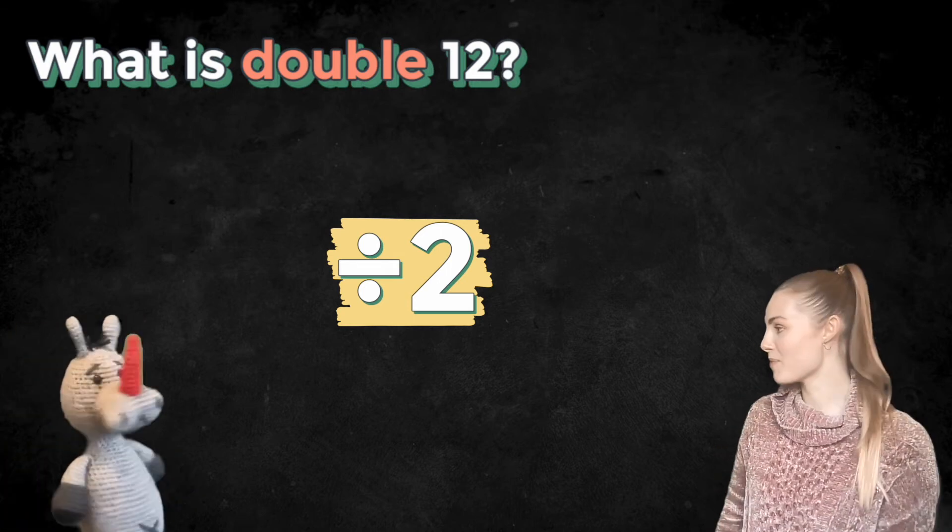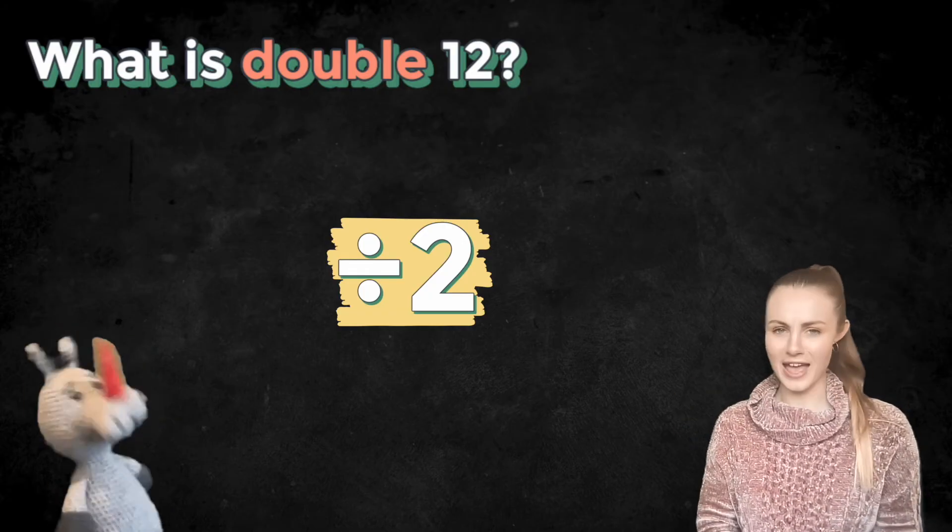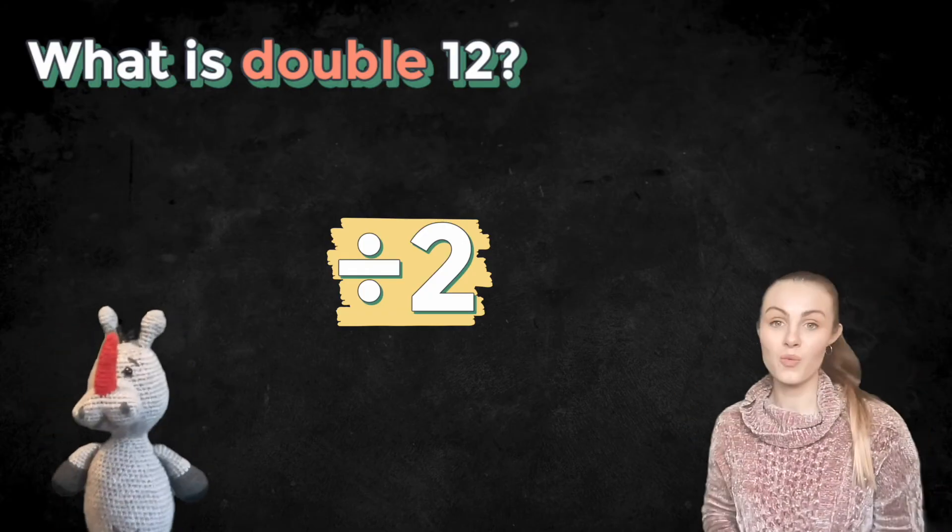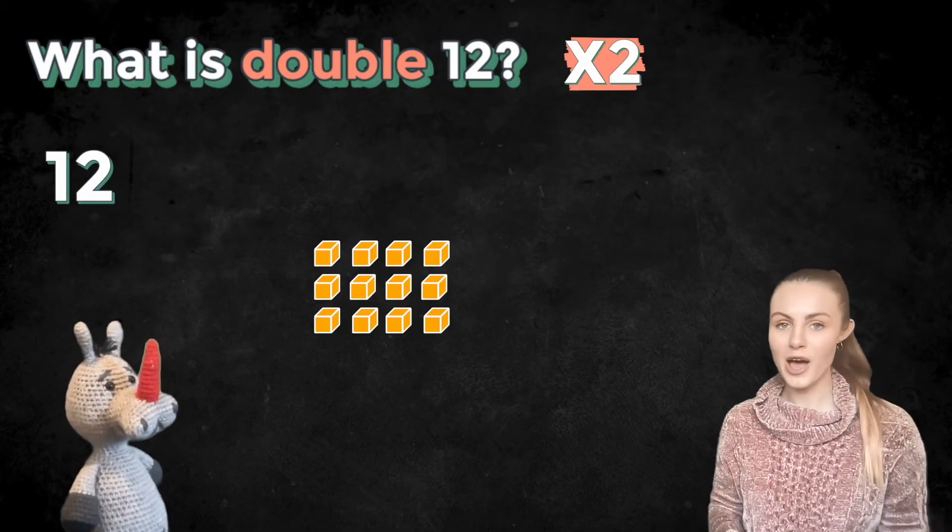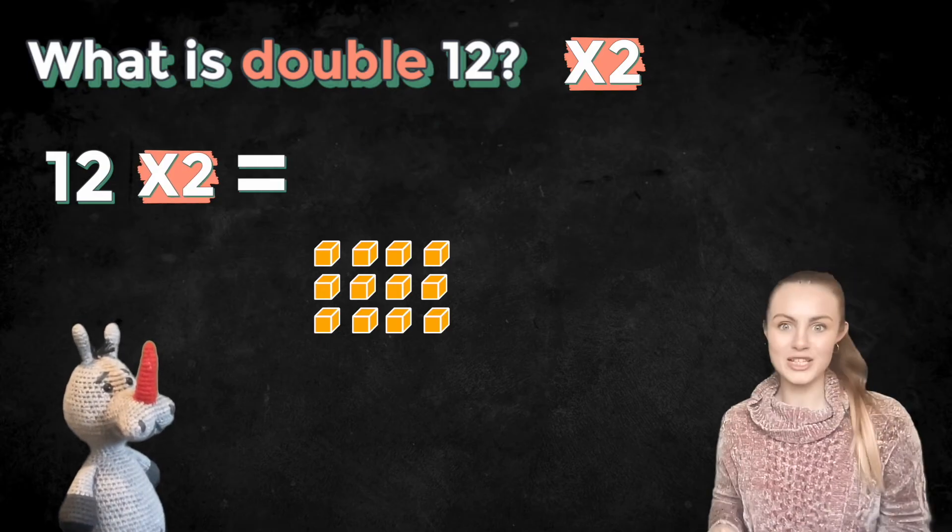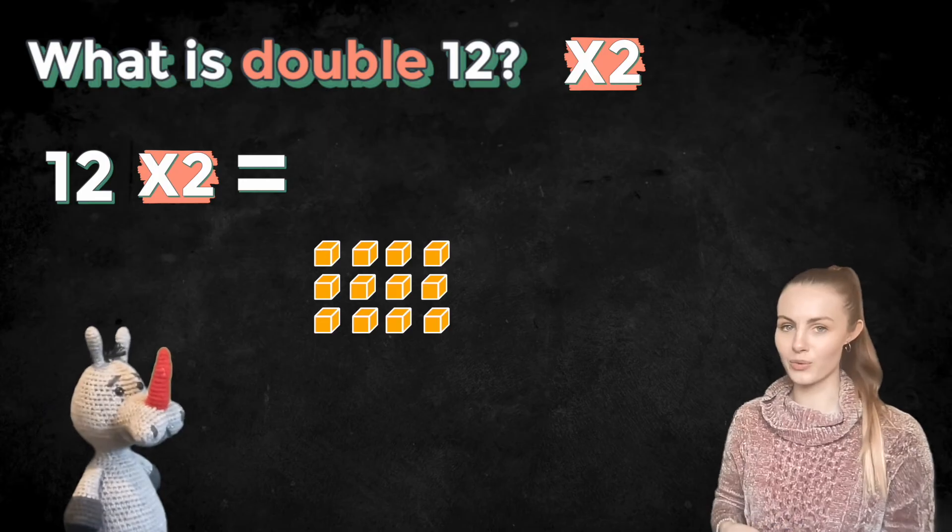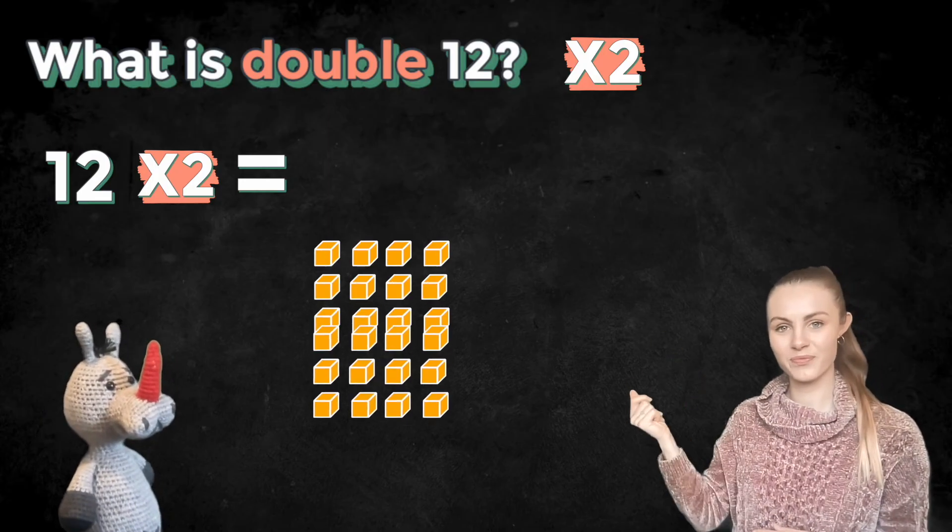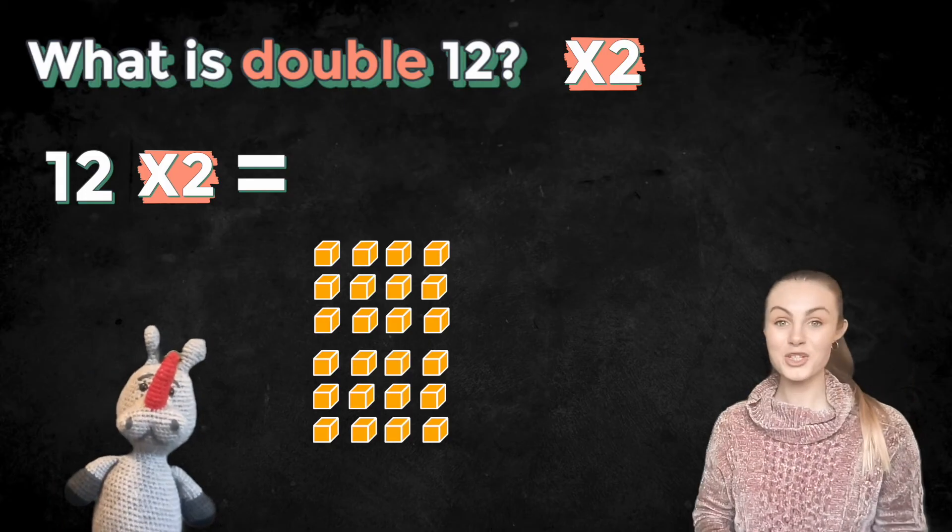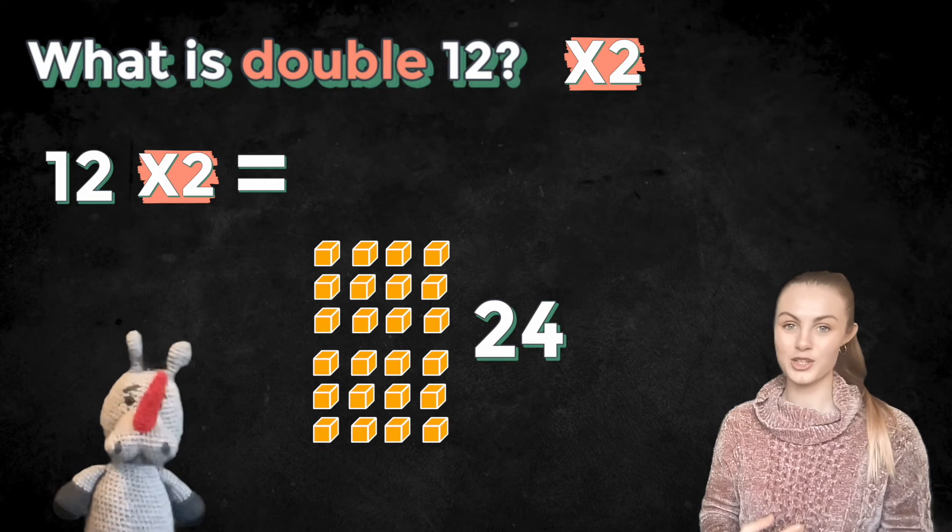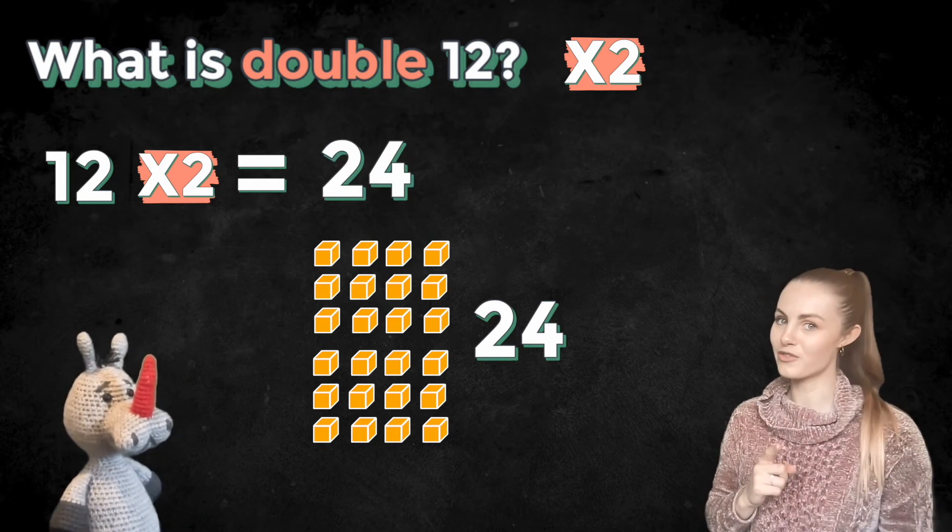Welcome back. I have to say, Pig, I'm afraid I disagree with you on this one, but mistakes is how we learn, so it's okay. When we're doubling, what we actually need to do is multiply by two. So let's write our number sentence. 12 multiplied by two. Now we need to work it out. So we need two lots of 12 and then we count how many we've got all together. Ready? Okay, now we can count. We've got 24 all together. So 12 multiplied by 2 is 24. That means that double 12 is 24.